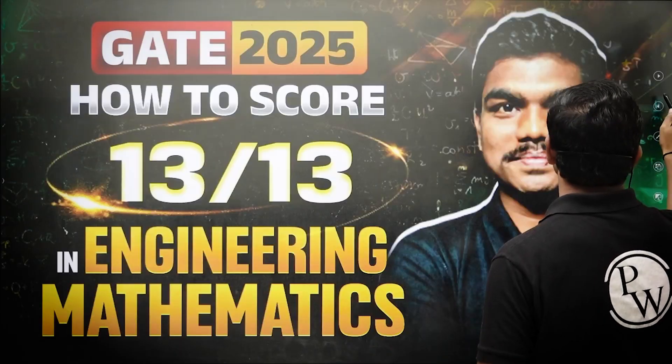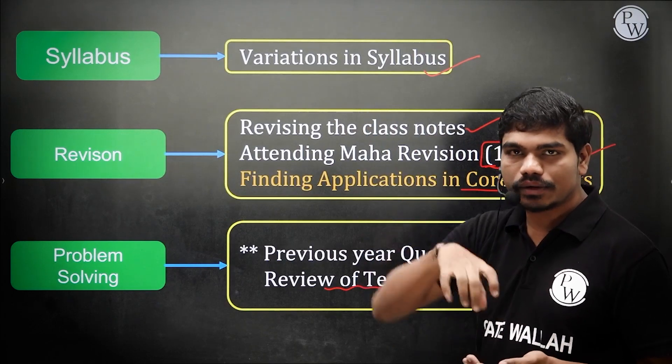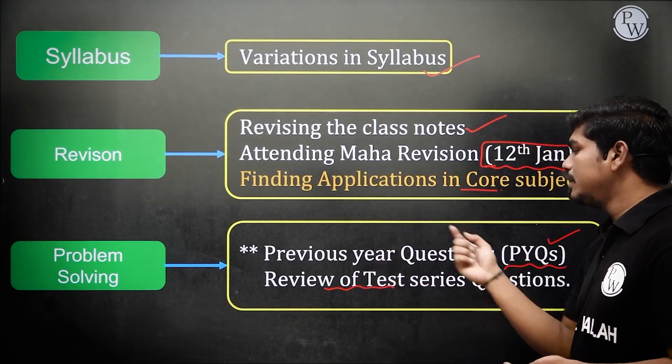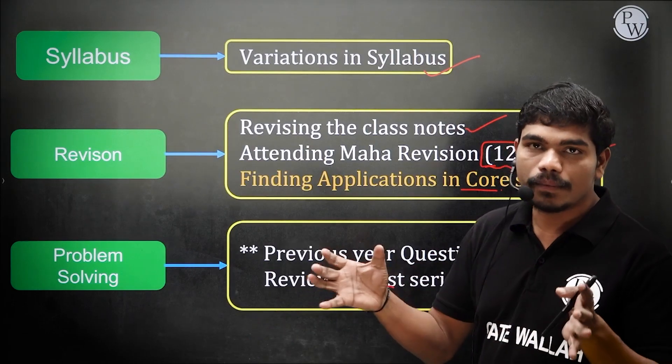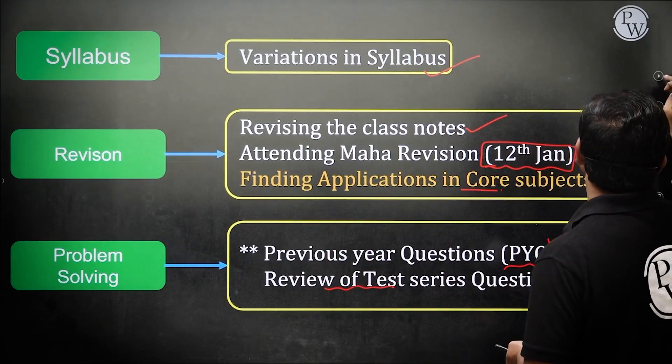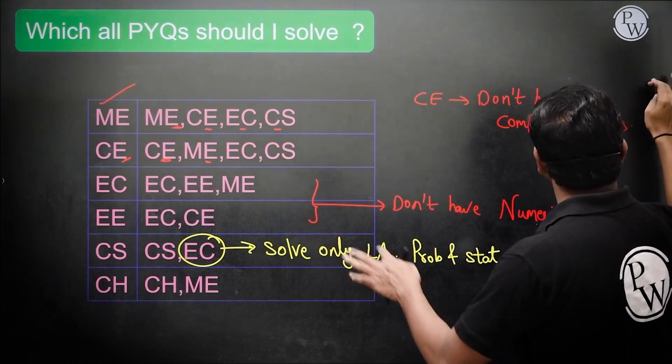GATE is not the kind of exam that requires exceptional intellectual power to solve questions. GATE is about practice and maintaining touch across the vast syllabus. If you are thorough with revision, anyone can excel in GATE. To summarize: identify syllabus variations for your branch, revise your class notes, attend the Maha Revision sessions, solve the relevant PYQs and test series, and review your mistakes. These key steps will minimize your time and maximize your marks.